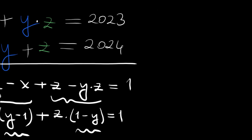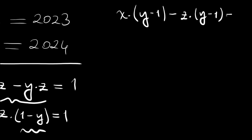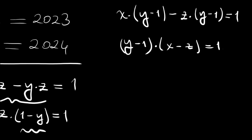We rewrite as x times (y minus 1) minus z times (y minus 1) equals 1. Grouping these, we get (y minus 1) times (x minus z) equals 1. This is a very nice factored form.